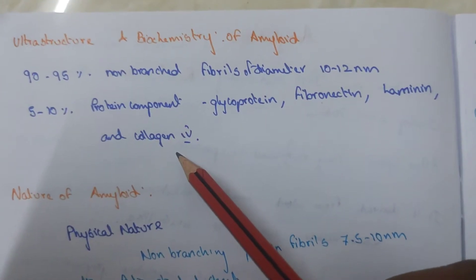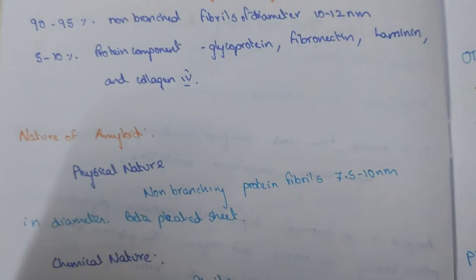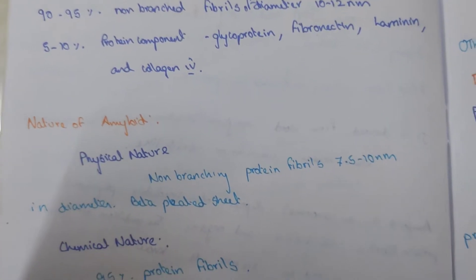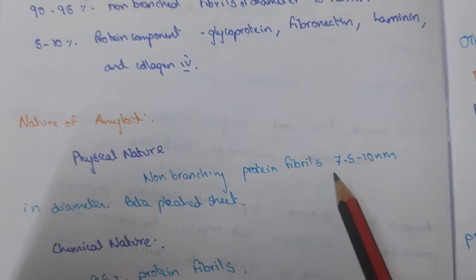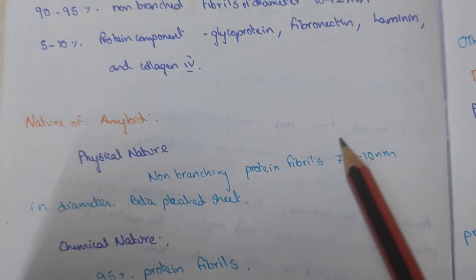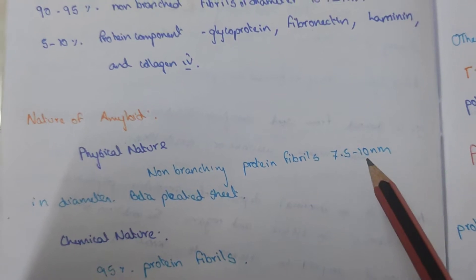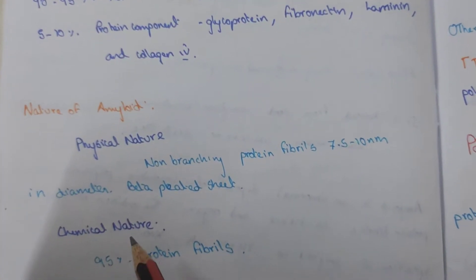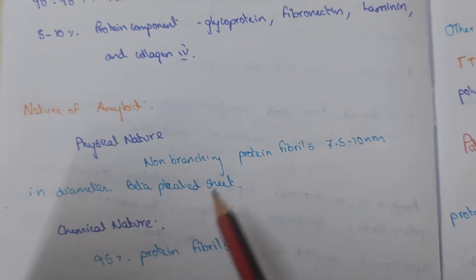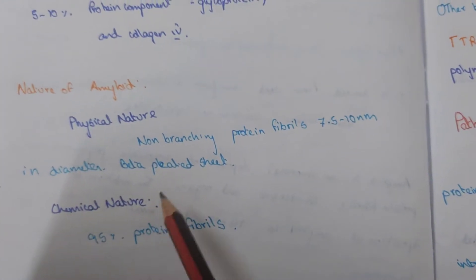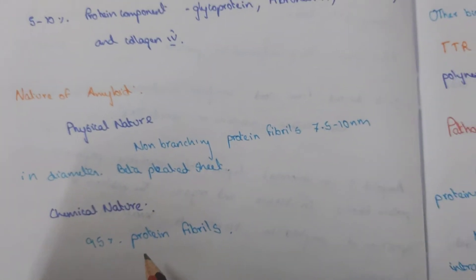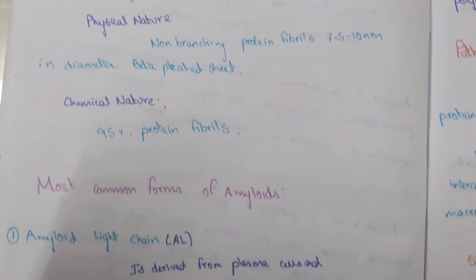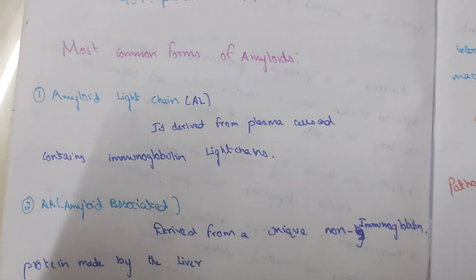That 5 to 10 percent protein compound is composed of glycoprotein, fibronectin, laminin, and collagen 4. The physical nature of amyloid is a non-branching protein fiber of diameter 7.5 to 10 nanometers, which looks like beta-pleated sheets. The chemical nature consists of 95 percent protein fibrils.